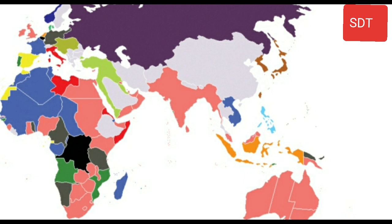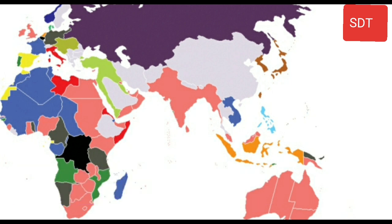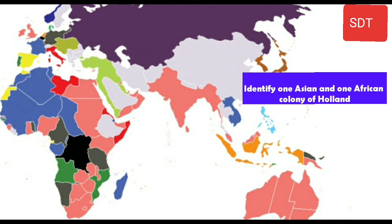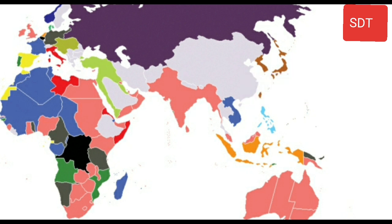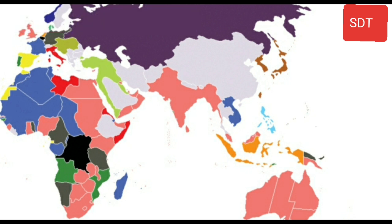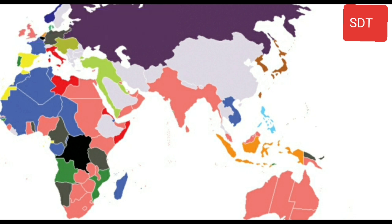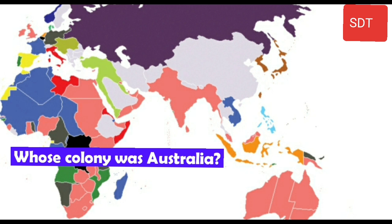Identify all these countries with the help of a modern map of the world. Identify one ASEAN and one African colony of Britain. Identify one ASEAN and one African colony of Holland. Identify one ASEAN and one African colony of France.